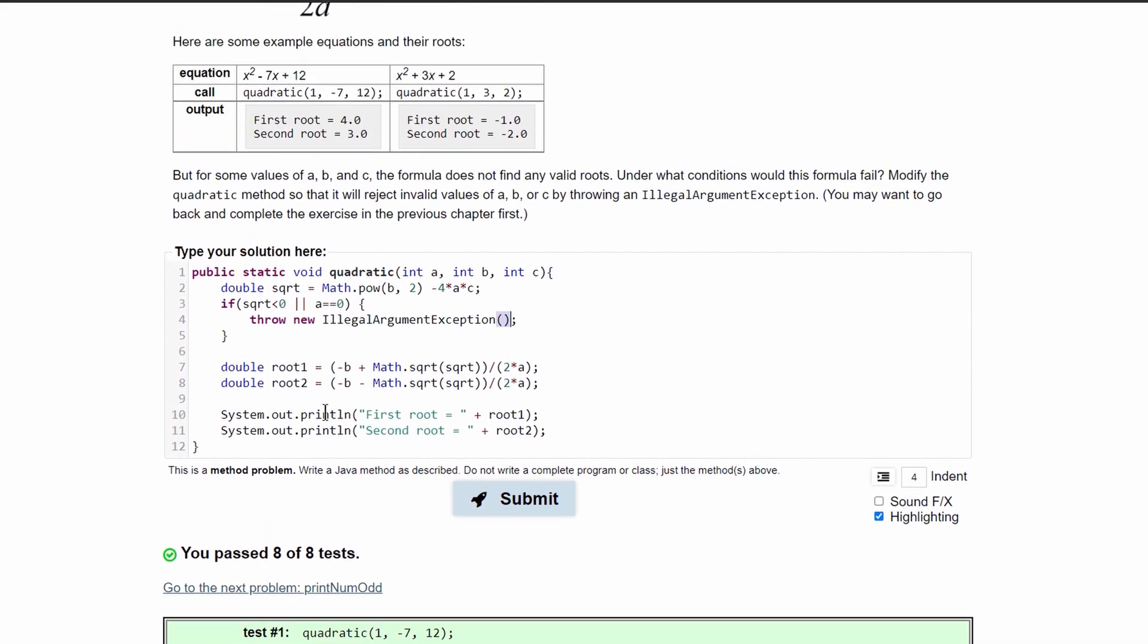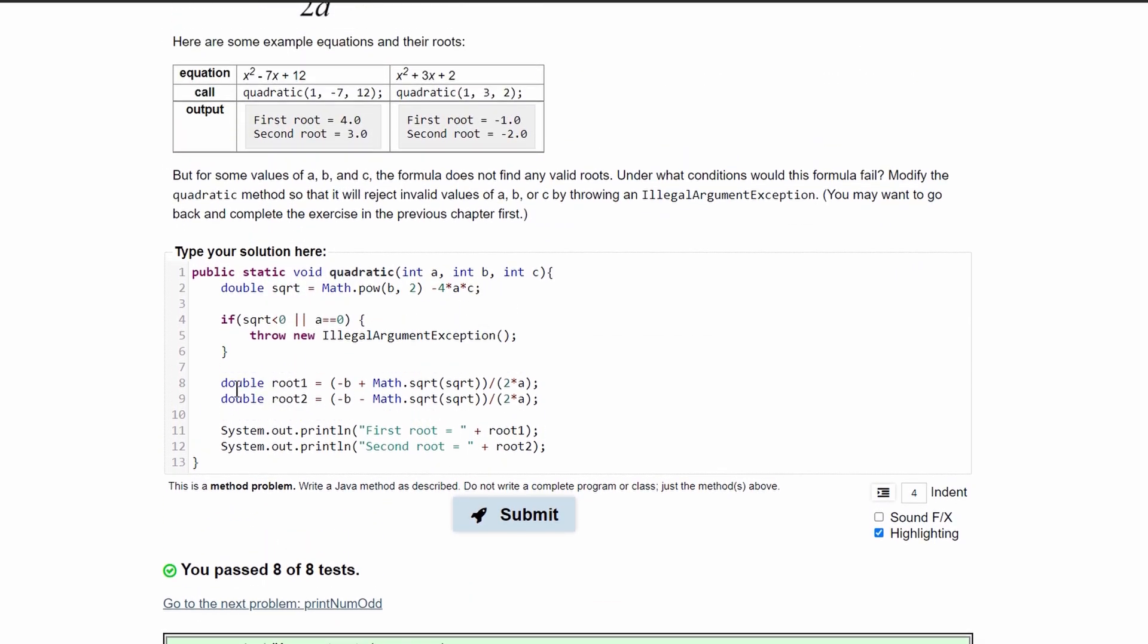If we wanted to make this code smaller, what we could do is take these and instead of having root1, root2, just take this part and actually paste it down here where we call root1 and paste it down here where we call root2.